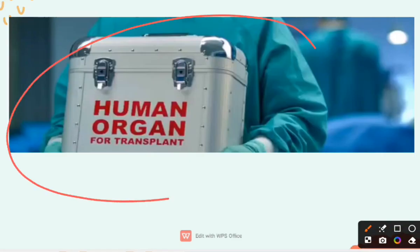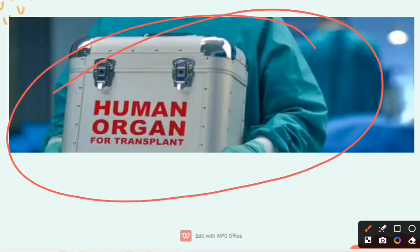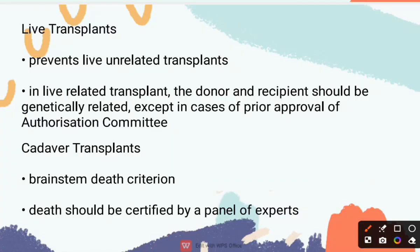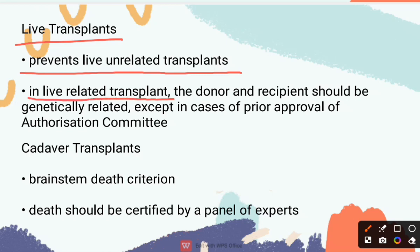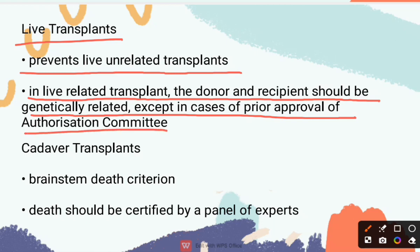This picture depicts human organ transplantation. Let us see some features of this act. Regarding live transplant, this act prevents live unrelated transplant. In live related transplant, the donor and recipient should be genetically related, except in cases of prior approval of the authorization committee.